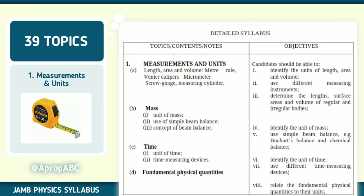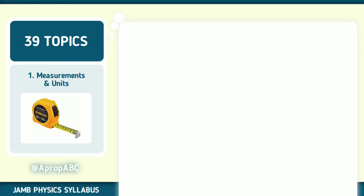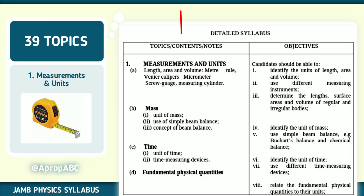Now to the detailed syllabus. We have 39 topics. The first topic, we have to be measures and units. But before we go deeply into all of these topics, just like you see, it is tabulated. We have the topic content or notes section. We have the second part, which is at the right side, to be the objectives. So check through the content, the topics. Then you check the objectives and connect them. After you have read the topics, connect them with the objectives that JAMB would like you to achieve.